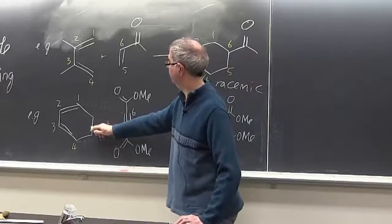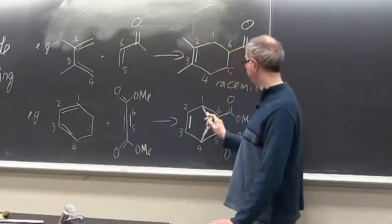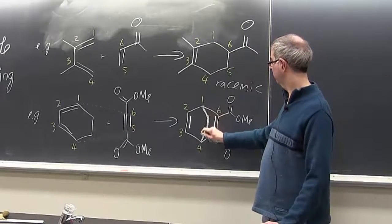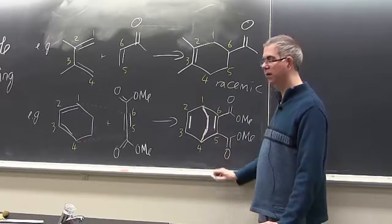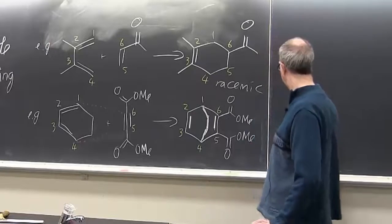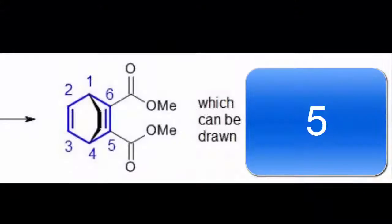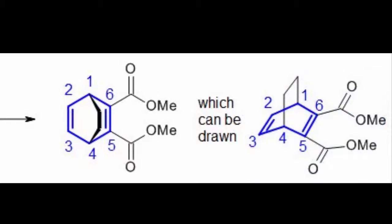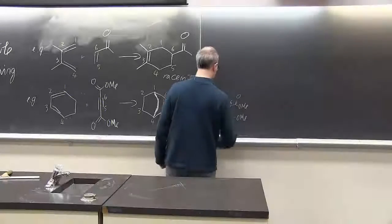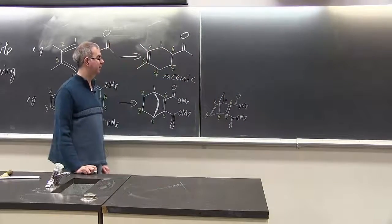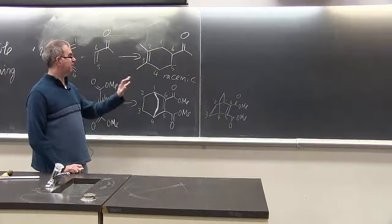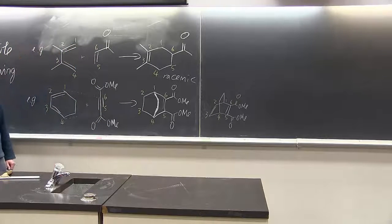These two carbons here that are not part of the main ring form like a bridge across the top of the ring. And we can actually redraw that if we want in three dimensions. You can have a go at this if you like. This is our six-membered ring again.